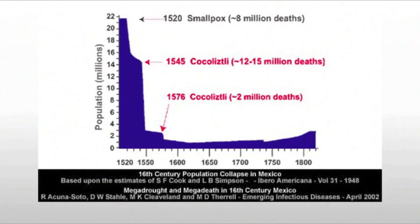We also see a rapid decline at the end of the 15th century, primarily due to disease. This is part of the reason why the pilgrims, for example, encountered very few natives — 90% of the native population had died by the time they arrived. By the time most settlers came in, even Jamestown around 1609, many early Europeans were not running into Native Americans because they had died of smallpox and any number of other diseases the Europeans brought over.